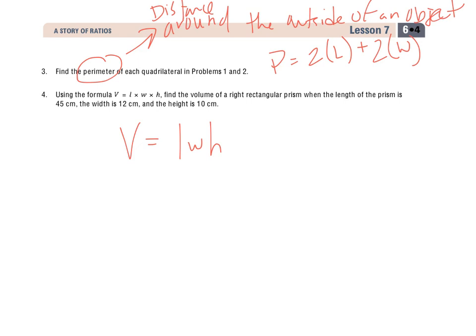So we've got to find the volume of a right rectangular prism when the length of the prism is 45 centimeters. So if I write it again, we're looking for the volume, the length, or L, is 45 centimeters times the width, which is 12 centimeters, and then the height, which is 10 centimeters. So now I can go through and multiply these out. And again, because of the commutative property, I could do 10 times 12, or I could do 45 times 12, or 45 times 10. And it doesn't matter the order that you multiply these in.